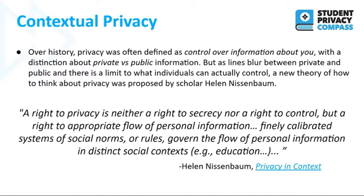Over history, privacy was often defined as control over information about you, with a distinction between private versus public information. But as lines blur, most evidently now with the pandemic, between private and public, and there is a limit to what individuals can actually control of their data, a new theory of how to think about privacy was proposed about a decade ago by scholar Helen Nissenbaum. She said, a right to privacy is neither a right to secrecy nor a right to control, but a right to appropriate flow of personal information. Finely calibrated systems of social norms or rules govern the flow of personal information in distinct social contexts, for example, education.